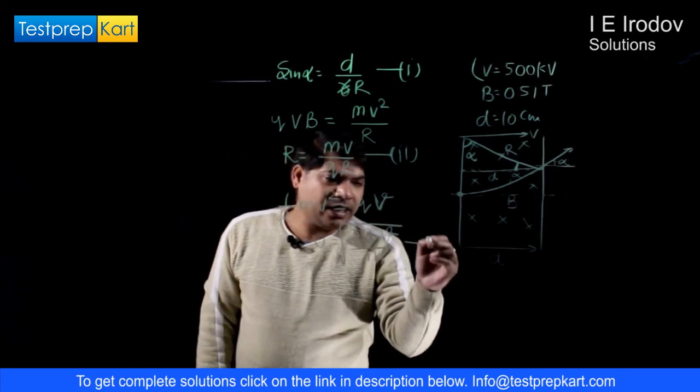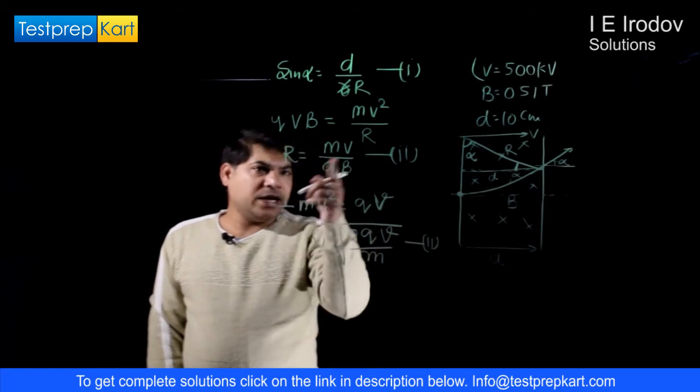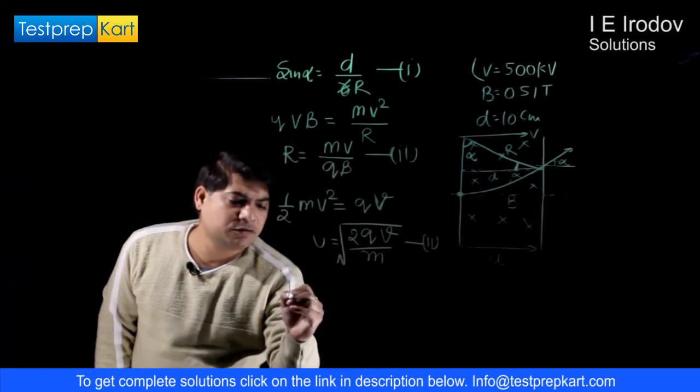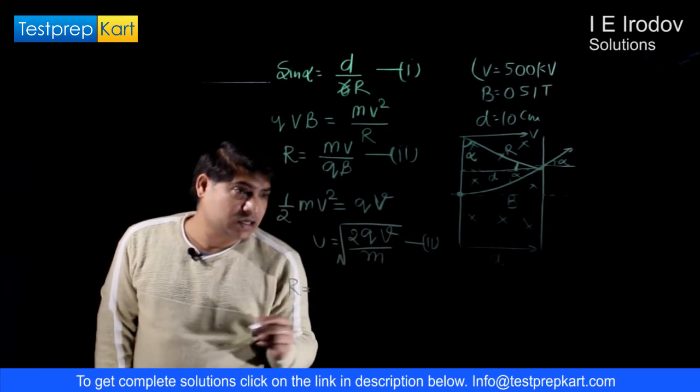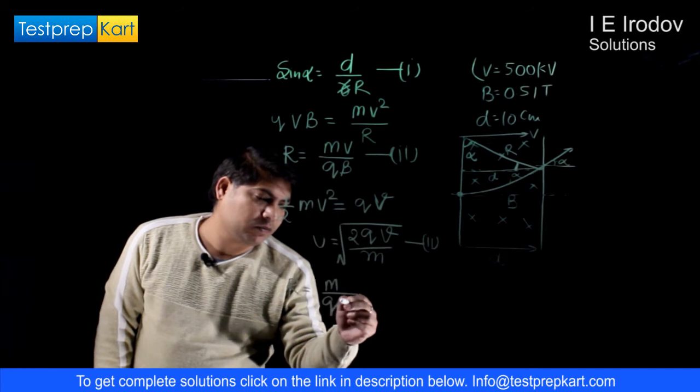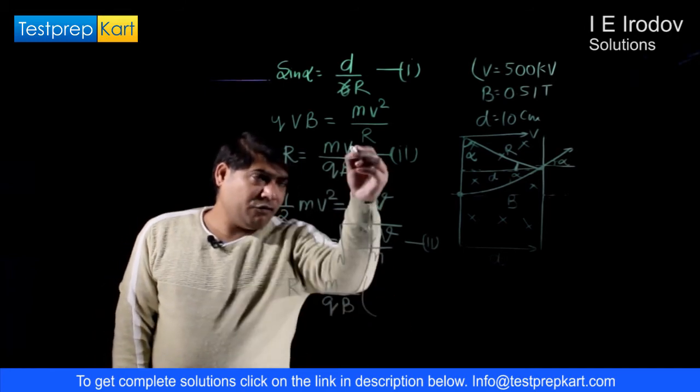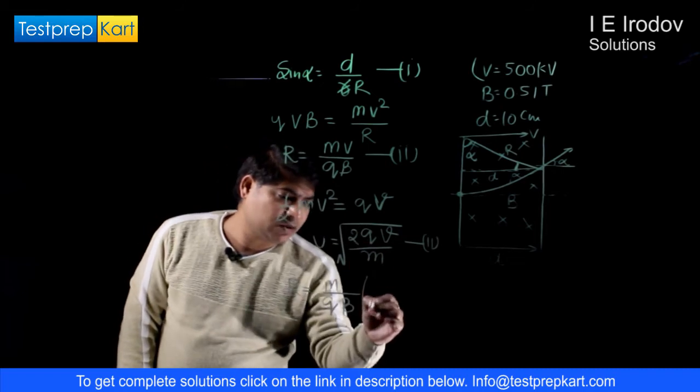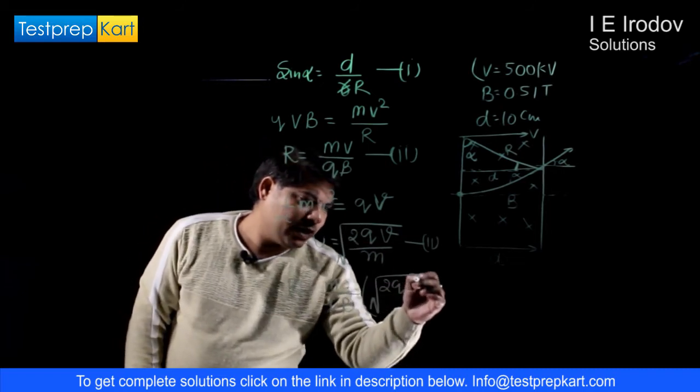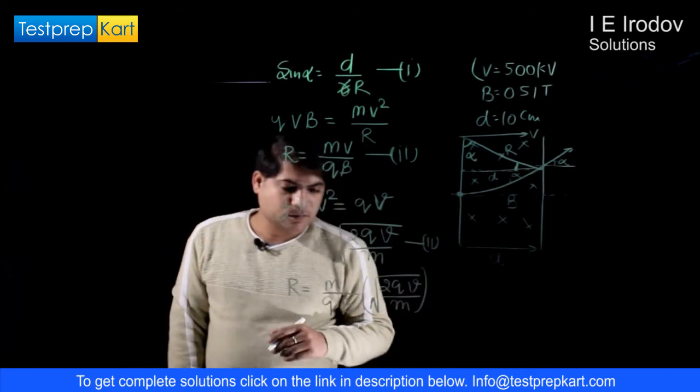So now we can intermix equation number 2 and equation number 3 and we may get the expression for radius. R is equal to M over QB times the velocity of the charged particle, which is equal to square root of 2QV over M.